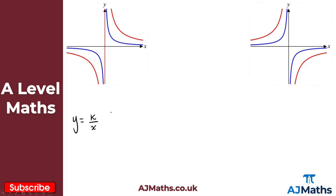I've got two different examples here. On the left-hand side is when K is positive, so when K is greater than 0. And then on the right-hand side, we have when K is less than 0, so when K is negative.